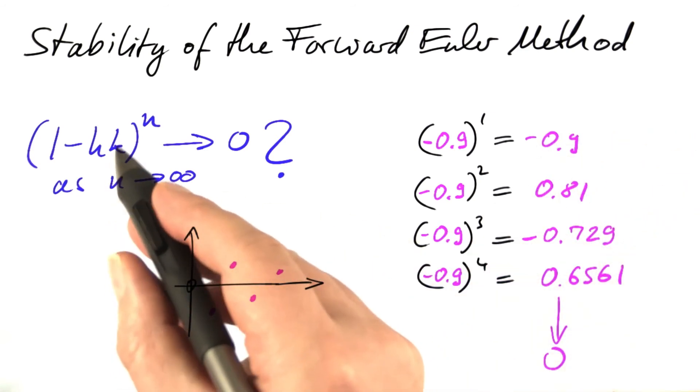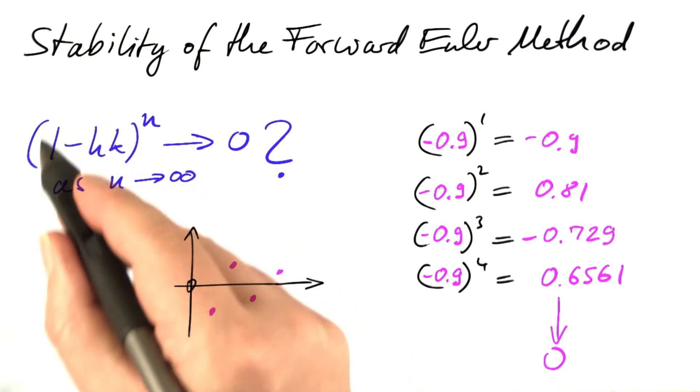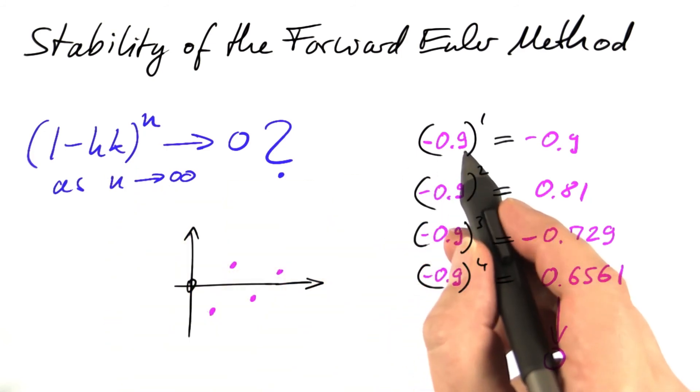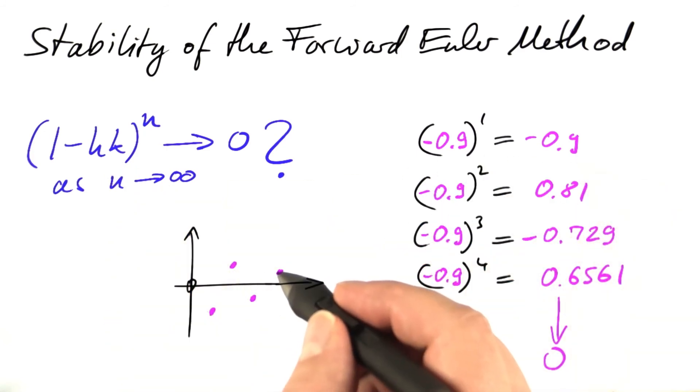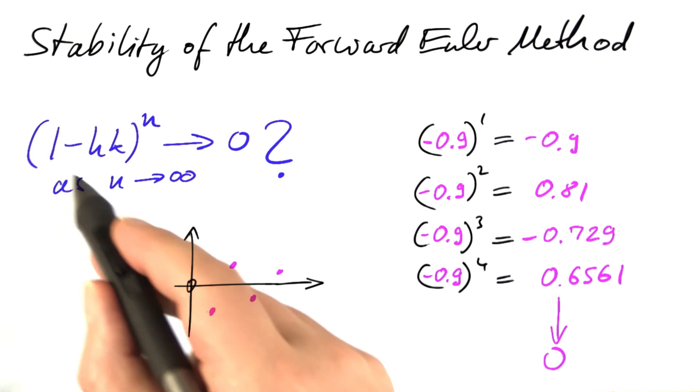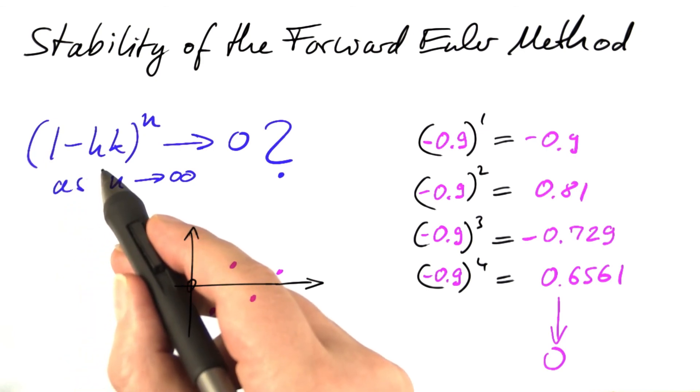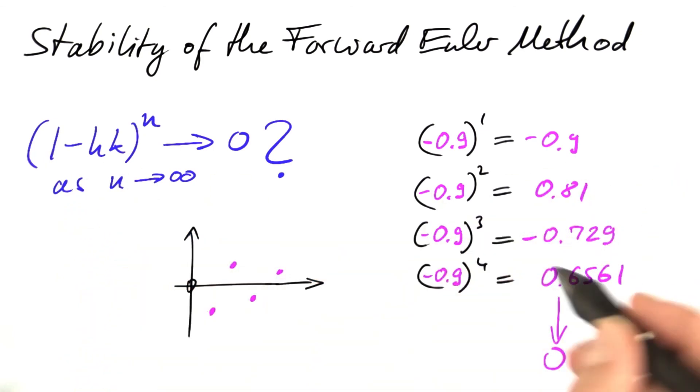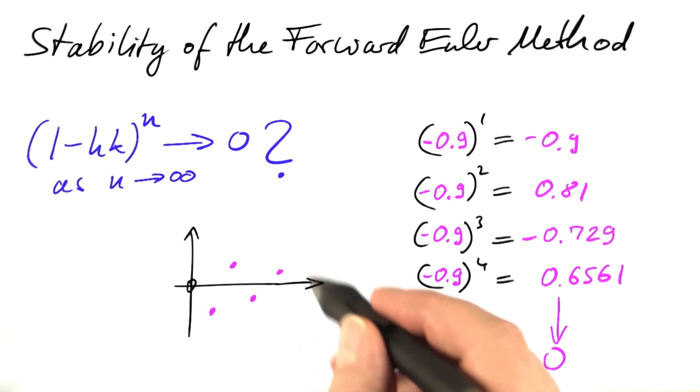You may remember this behavior from the SEIR model that we simulated before. If this expression would equal minus 0.99, we would still see decay with this sort of oscillation. If it would equal minus 0.999, this would still work, but become very, very slow.